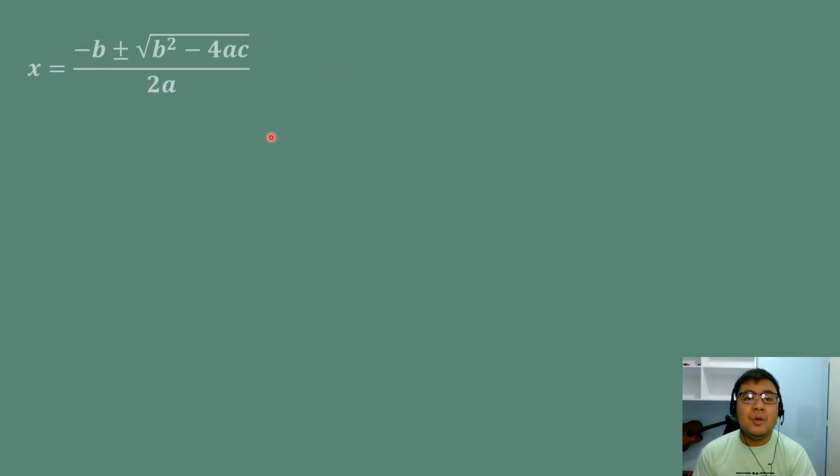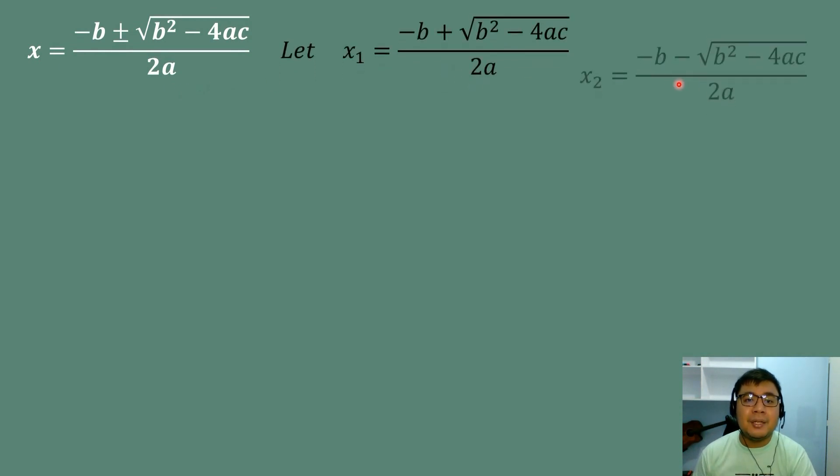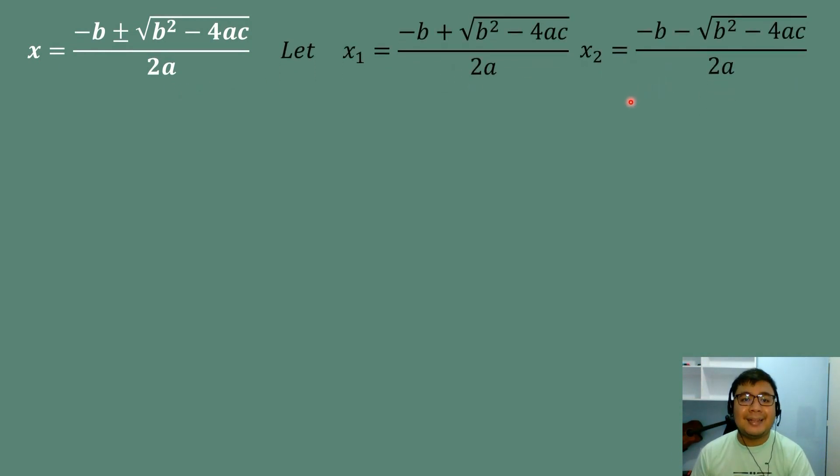The sum and the product of the roots of the quadratic equation AX squared plus BX plus C is equal to 0 can be determined using the coefficients A, B, and C. Remember that the roots of a quadratic equation can be determined using the quadratic formula. So, using the quadratic formula, we will let X₁ and X₂ be the roots of the quadratic equation.